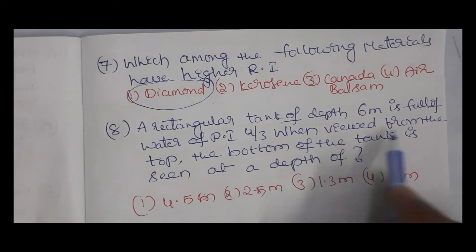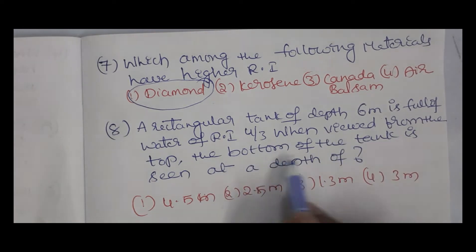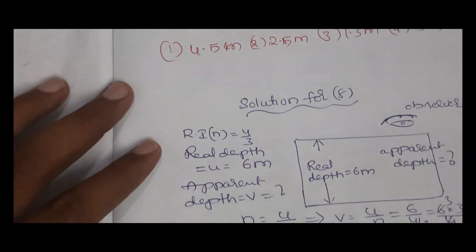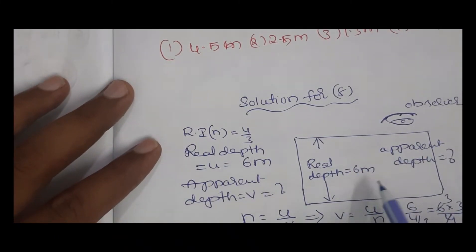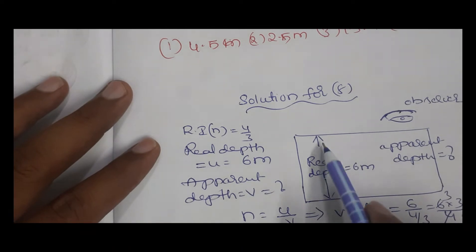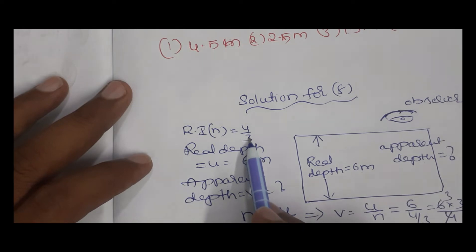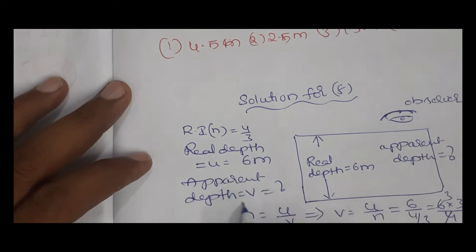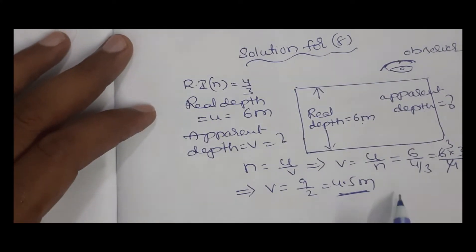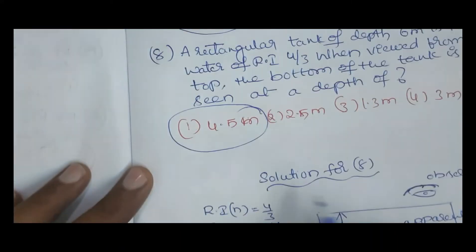Question 8: a rectangular tank of depth 6 meters is full of water with refractive index 4/3. When viewed from the top, the bottom is seen at a depth of — using the same model as before, real depth is 6 meters, n = 4/3, so apparent depth = 6 ÷ (4/3) = 6 × (3/4) = 4.5 meters. The option is 4.5.